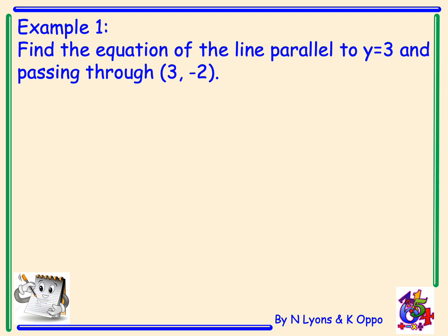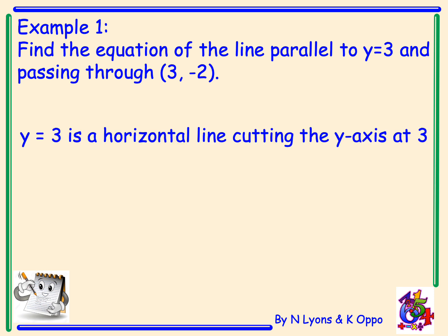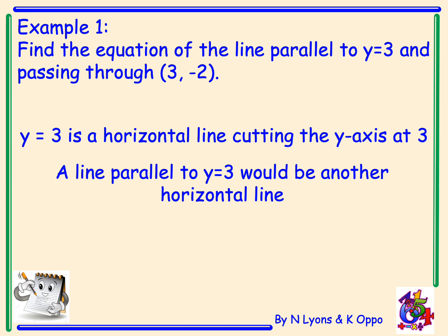Example 1: Find the equation of the line parallel to y equals 3 and passing through the point (3, -2). y equals 3 is a horizontal line cutting the y axis at the point (0, 3). A line parallel to y equals 3 would be another horizontal line — both have gradient equal to 0. Since this new line passes through the point (3, -2), its equation is y equals negative 2.